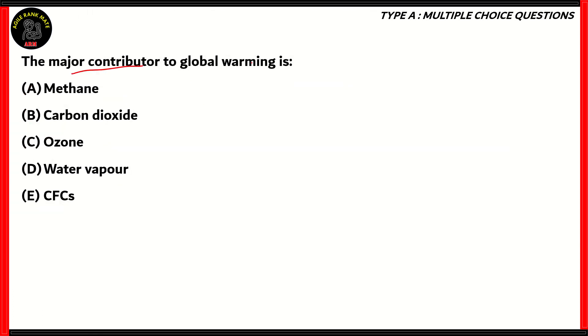Next question. The major contributor to global warming is: methane, carbon dioxide, ozone, water vapor, or CFCs. Now it's important to remember that all of these, in one way or another, are greenhouse gases. They all store heat and help the atmosphere become warm. So we need to find out which of these is the major contributor. Now if you look at CFCs, them being a greenhouse gas is just a side effect. Their main problem is that they deplete the ozone layer. So they are, in a way, not major contributors to global warming. So option E is incorrect.